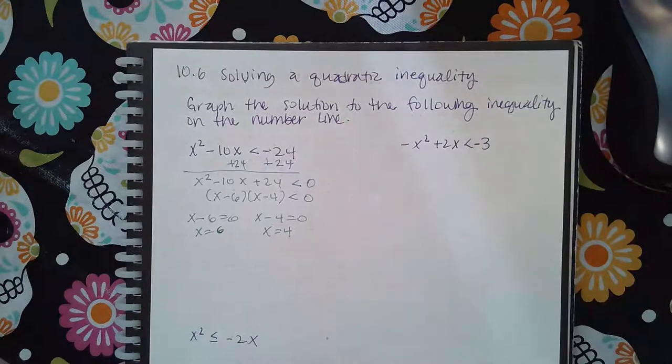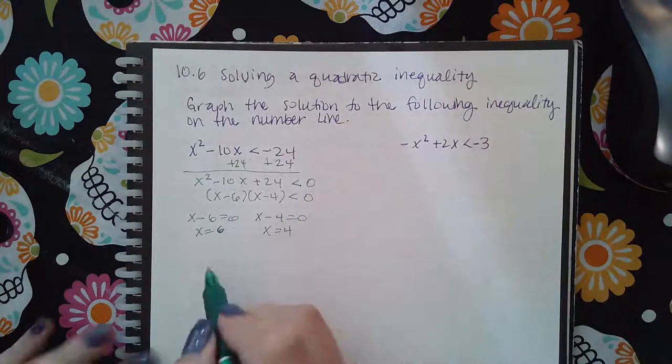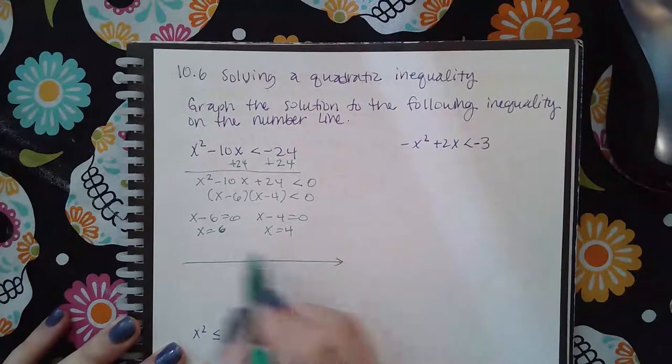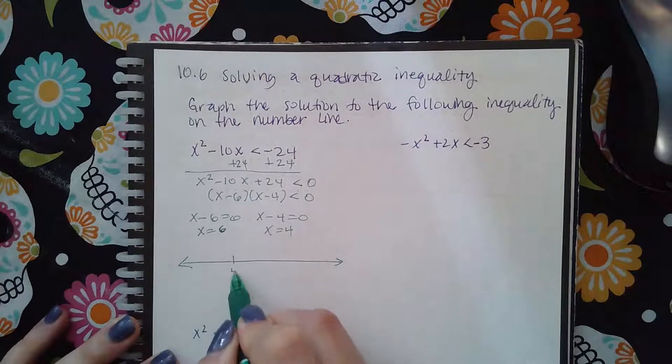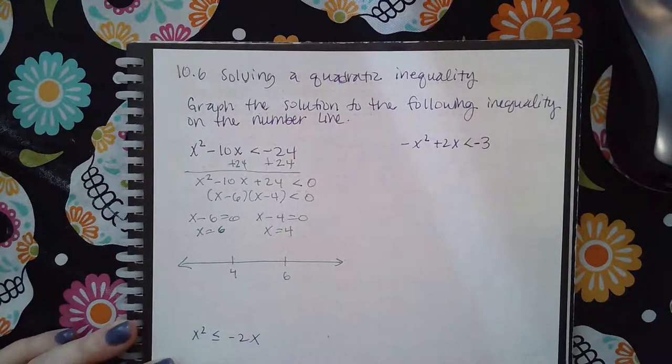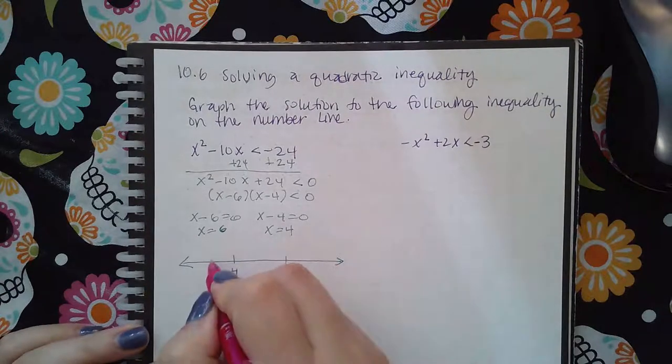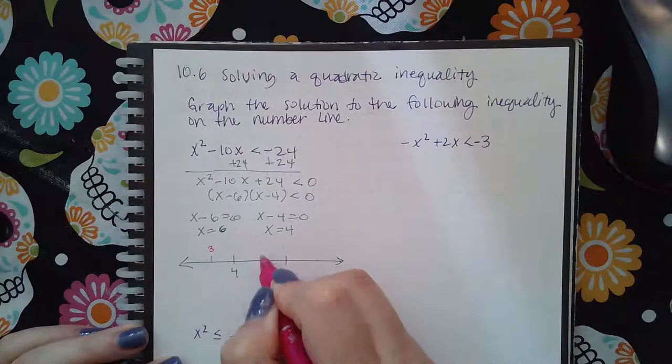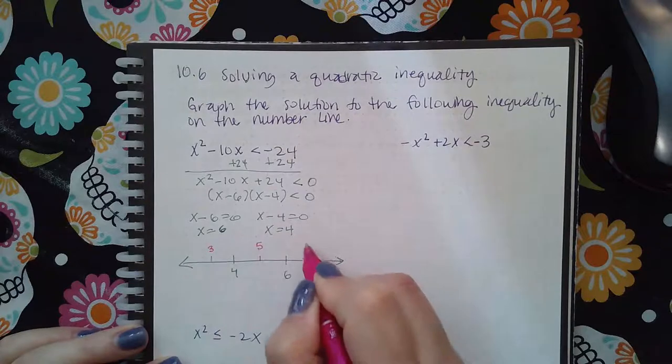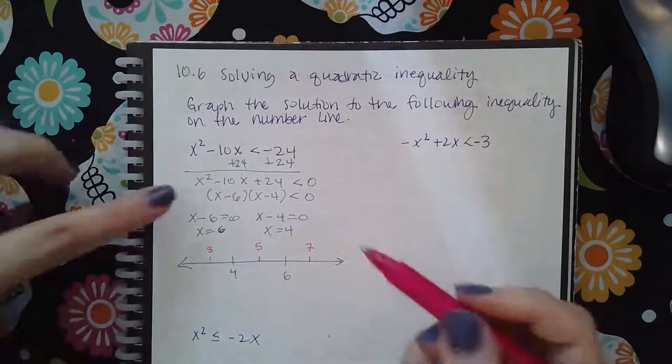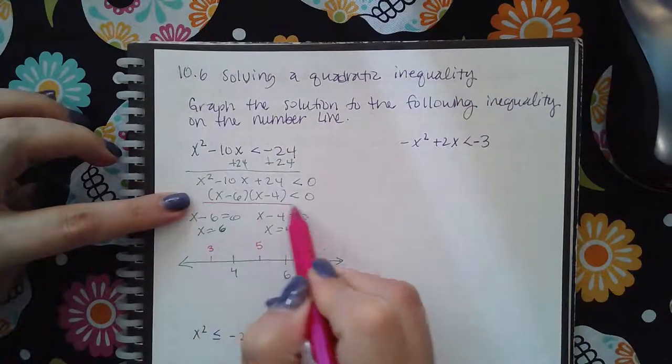So you get x equals six and x equals four. And then you create your number line. So as far as these two numbers, four goes first and then the six. And so then we'll pick our test values: three and five and seven. And so you can plug them into the factored version.